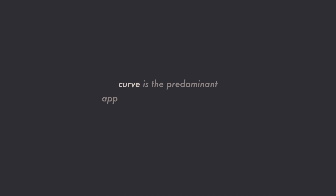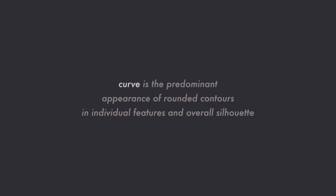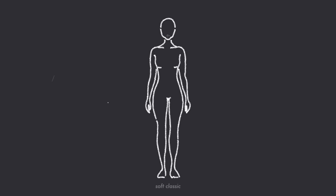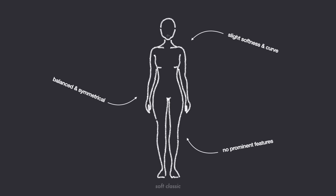Soft Classic: balance and curve. If you have the soft classic body type, then your dominant features are balance and curve. Curve is the predominant appearance of rounded contours in individual features and overall silhouette. The soft classic has an overall moderate and symmetrical balanced appearance with just a touch of softness and curve. Similar to the dramatic classic, the soft classic's features and proportions all carry a similar visual impact — when glancing at a soft classic woman, the eye does not catch on any particularly prominent feature. Soft classics accommodate balance and curve.